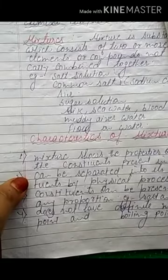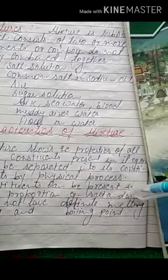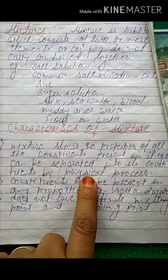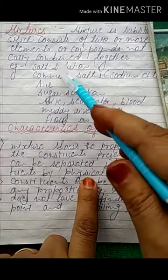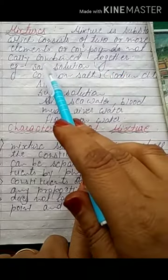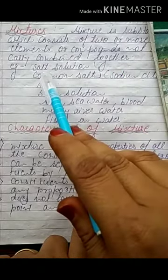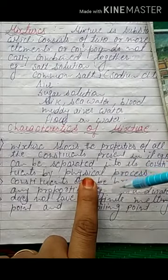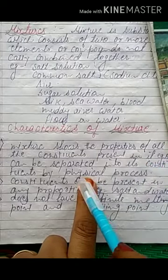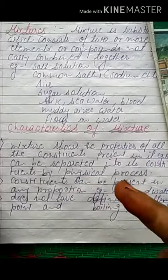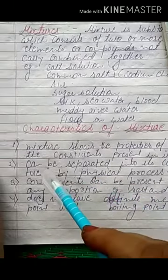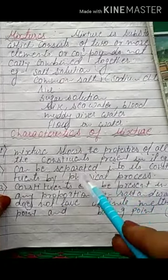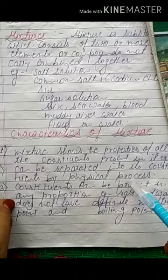Second characteristic: a mixture can be separated into its constituents by a physical process. Since it is made by a physical method and not combined chemically, we can obviously separate or differentiate the components by a physical method.